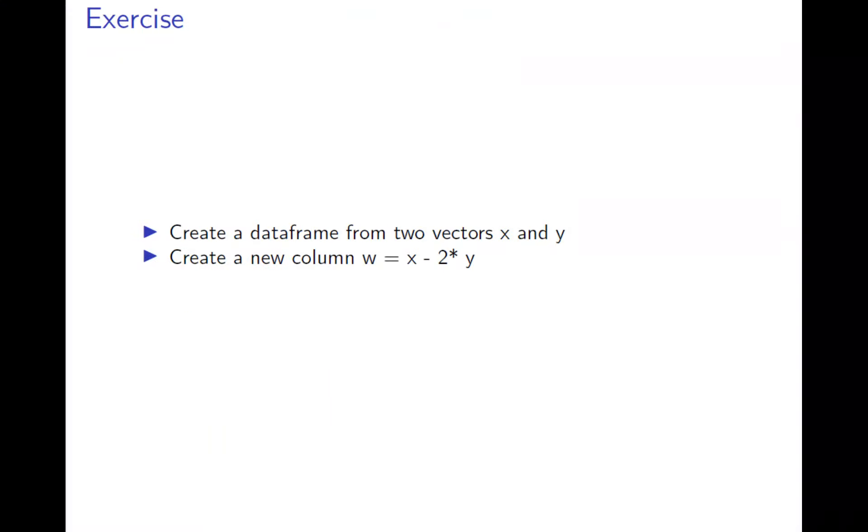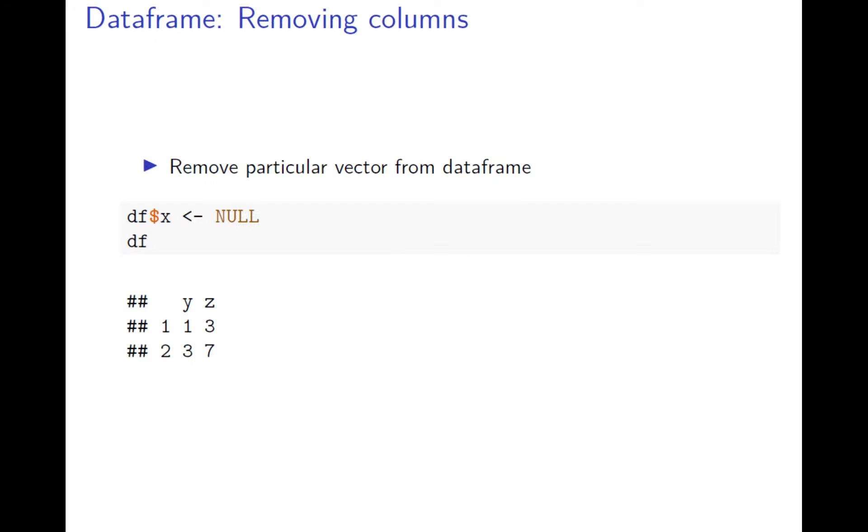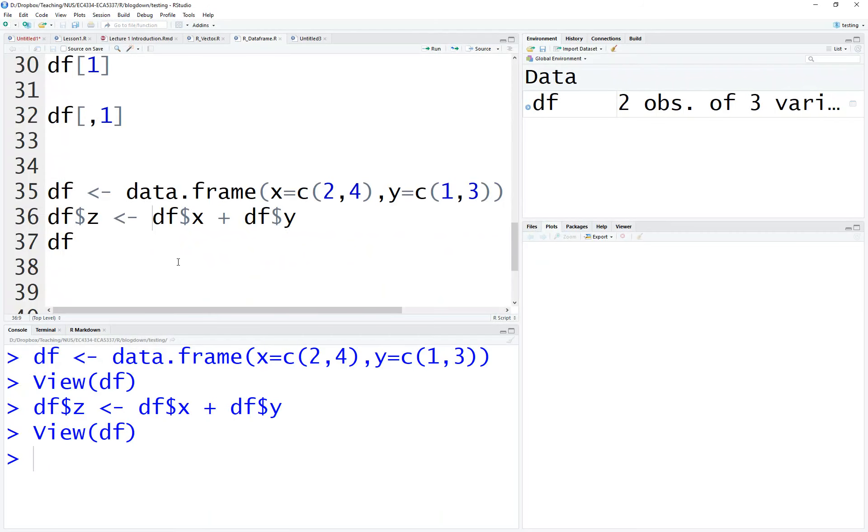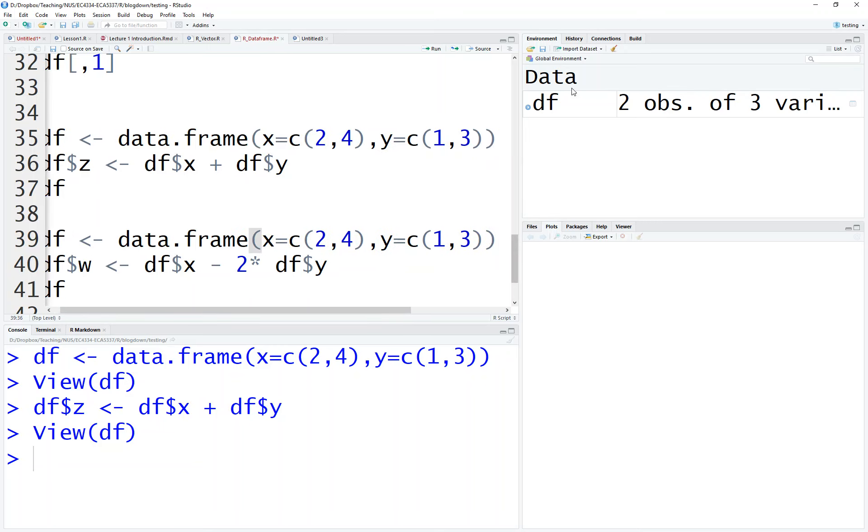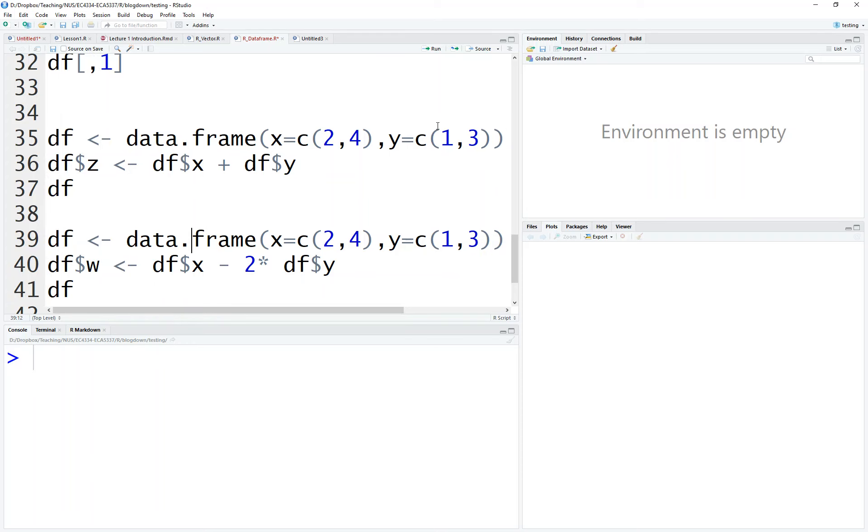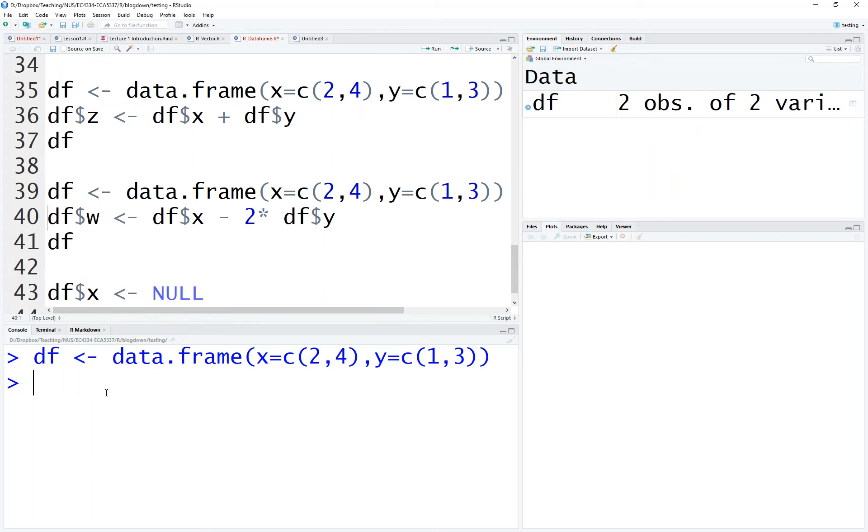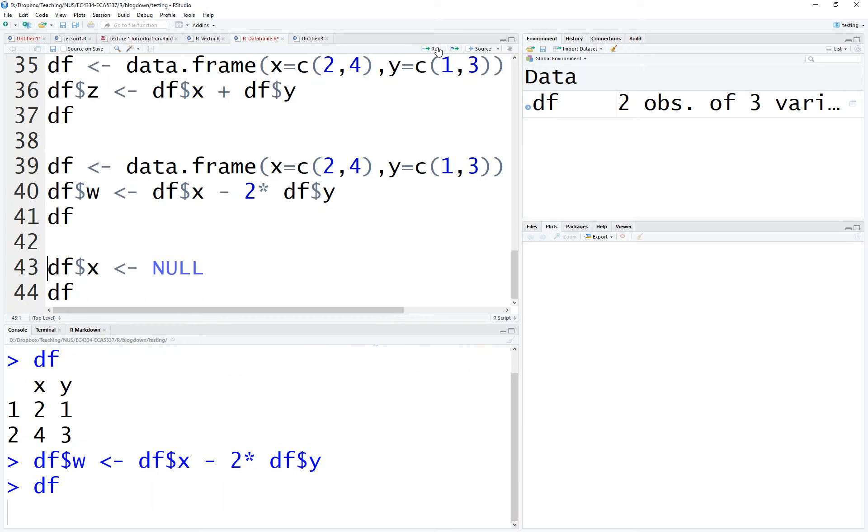Now we have an exercise. We create two vectors from x and y, and now we define a new column w, which is x minus two times y. Let's see how it's done. Copy this. The first line is fine. Let's clear everything out. The first line just defines x and y again, right? Let's define this, and see here, this is how we get x, y, and w. This is how we get another column there.